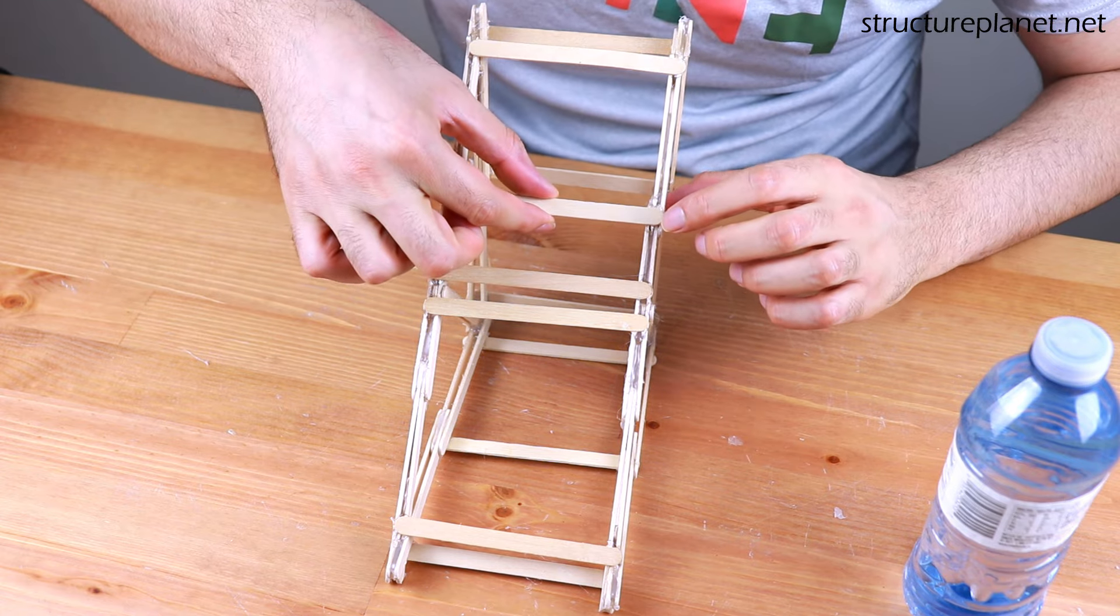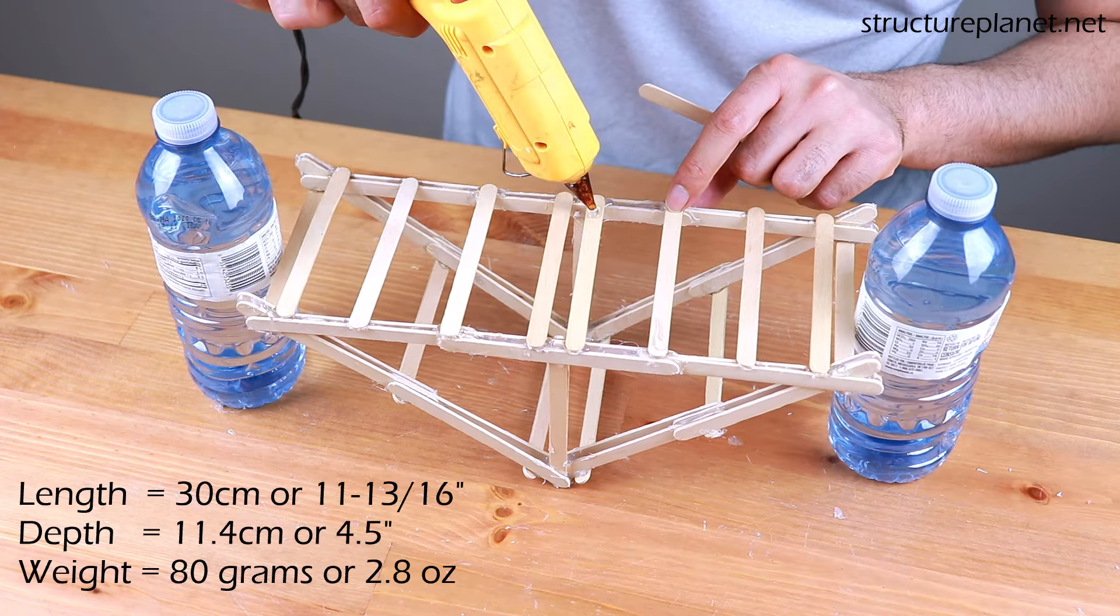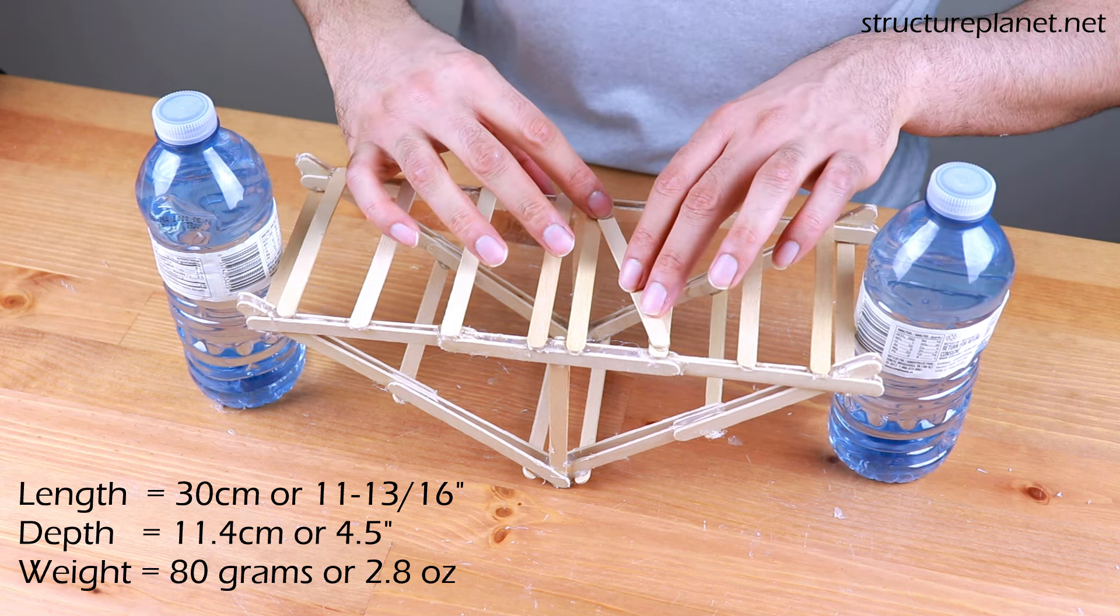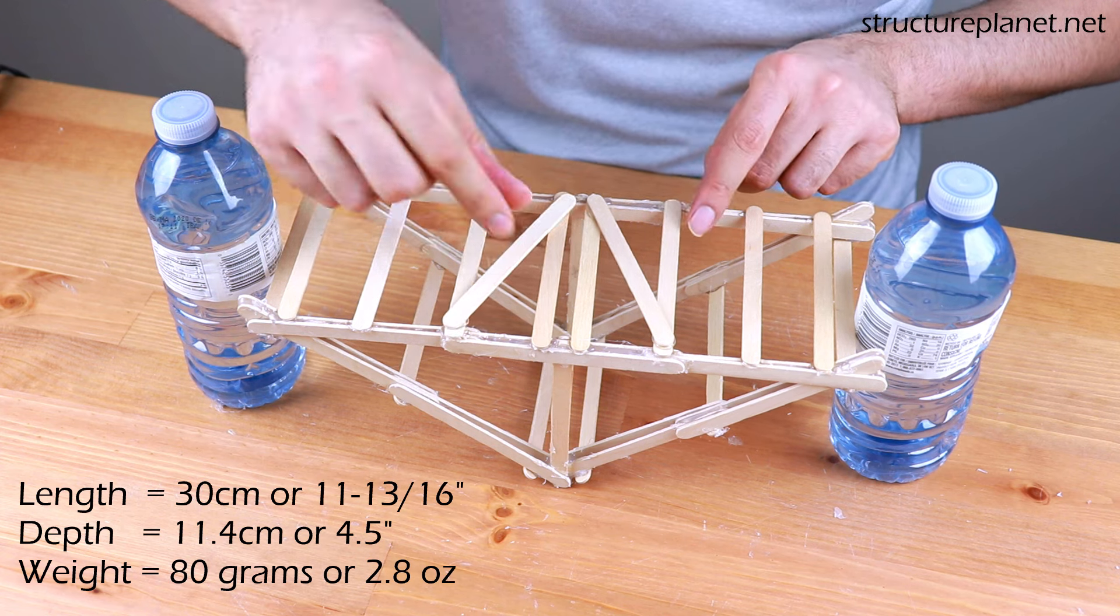This is an inverted truss bridge spanning about 30 cm or 11.8 inches and has a depth of 11.4 cm or 4.5 inches. It also weighs about 80 grams or 2.8 ounces.